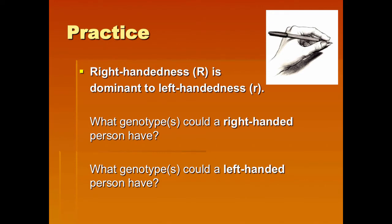Let's talk about being right-handed or left-handed. Being right-handed is dominant to being left-handed, and you'll notice that in our poll today, 19 of you were right-handed and only two were left-handed — showing how dominant right-handed is. If big R stands for right and little r stands for left, the genotype for a right-handed person could be big R, big R, or big R, little r — either homozygous dominant or heterozygous. The only possible genotype to be left-handed is little r, little r.